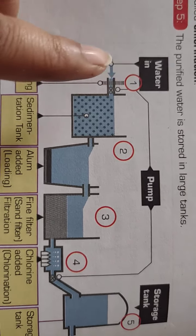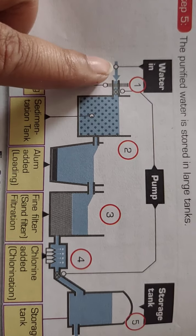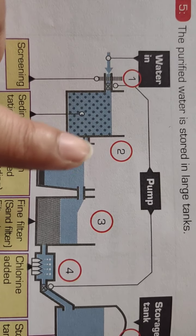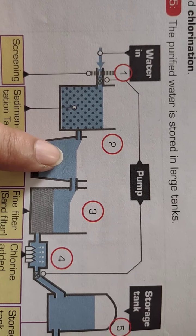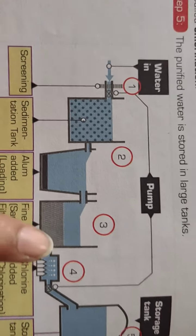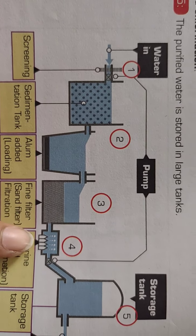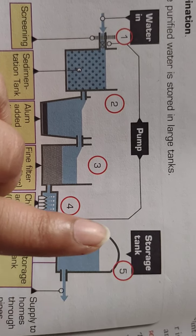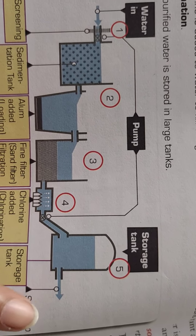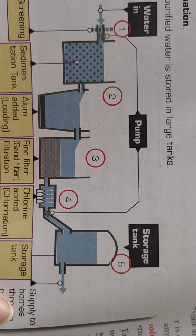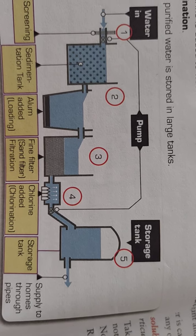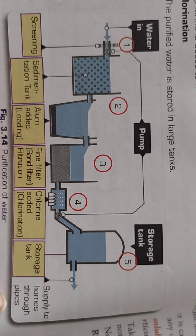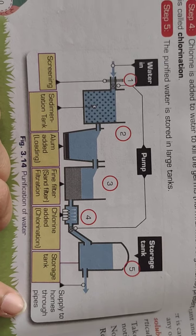So in this way, you can see that water purification involves a five-step process: number one, screening; then sedimentation; then loading with the help of alum; then sand filtration; then chlorination; and then storage — after which the water is supplied to homes through pipes. This is the whole purification process.